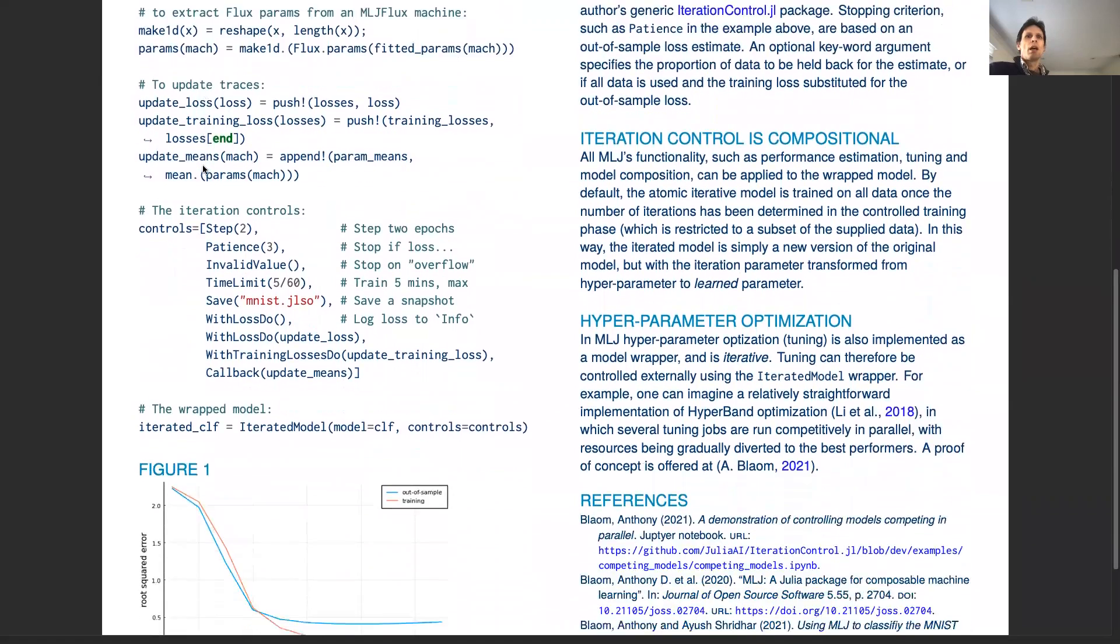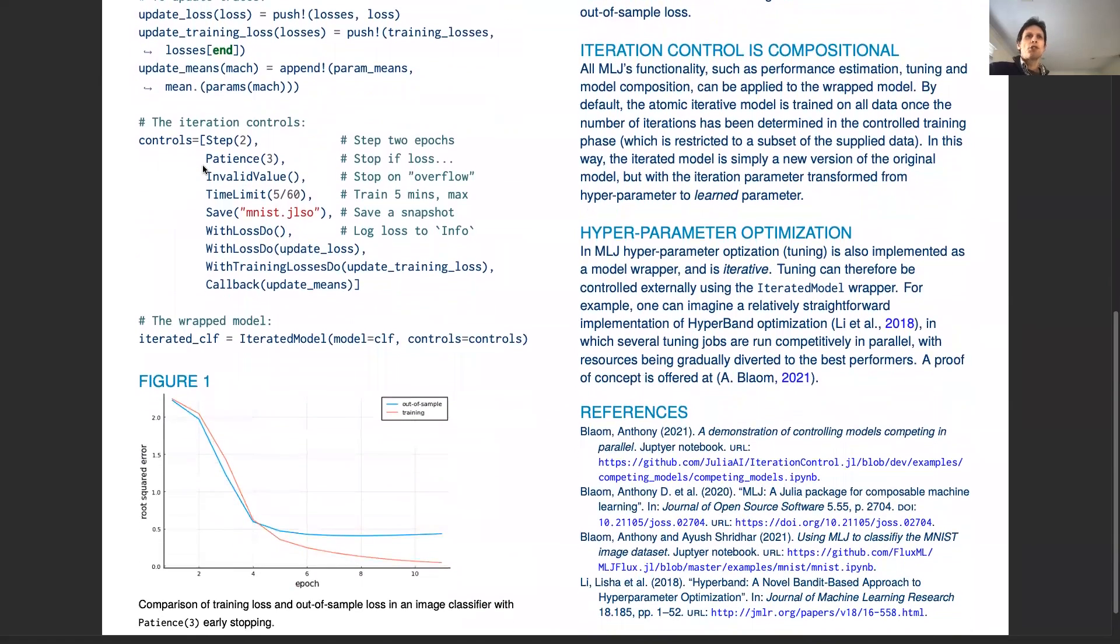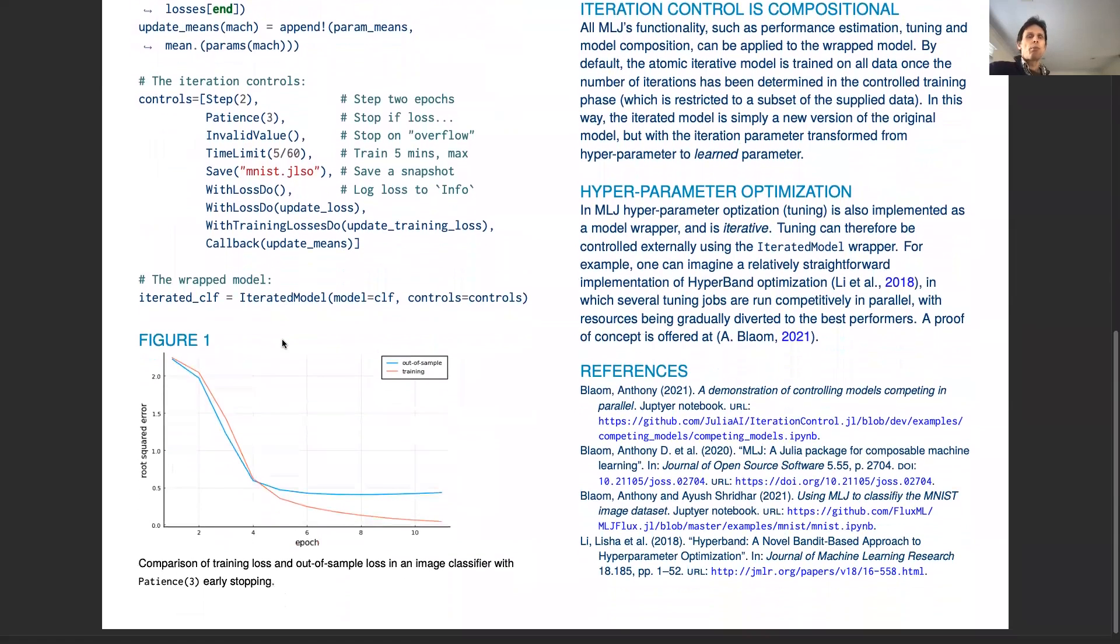At the end of training, which proceeds just like the training of any model since this is a wrapper, we can plot the traces. We can see training losses and out-of-sample losses. As we note here, training is stopped when the out-of-sample losses started to deteriorate.